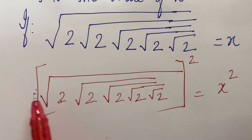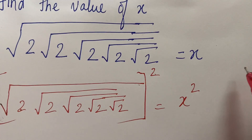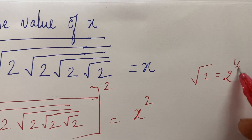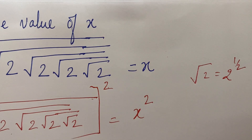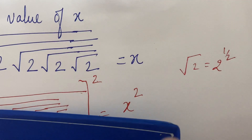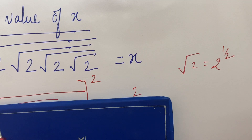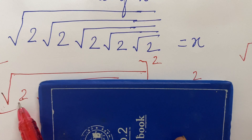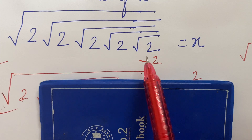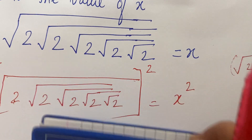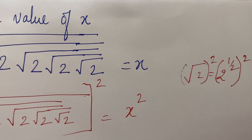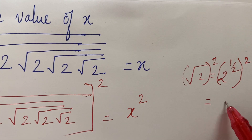Do you understand? What does square root mean? It is 2 raised to the power 1 by 2. So we are taking root 2. Hide this part. So what is square root of 2 whole square? It will be 1 upon 2 into 2, which gives you the answer as 2.